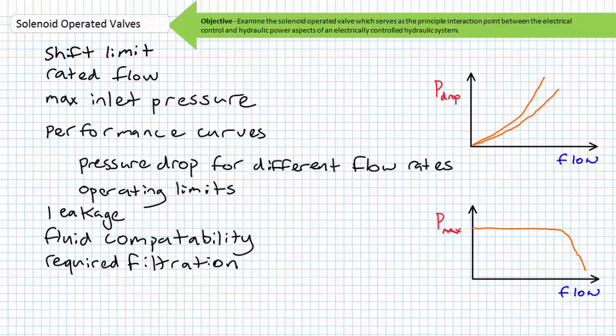The solenoid operated valve, like other hydraulic valves, typically have a rated flow and a maximum inlet pressure. The rated flow is a quick snapshot of this valve's performance at that flow rate. If you wanted to dive deeper into the valve's performance at flow rates other than the rated flow, you'd ordinarily consult the pressure drop for different flow rates performance curve or the operating limits performance curve. The pressure drop for different flow rates performance curve shows the typical restriction pressure drop created by the valve at different flow rates.